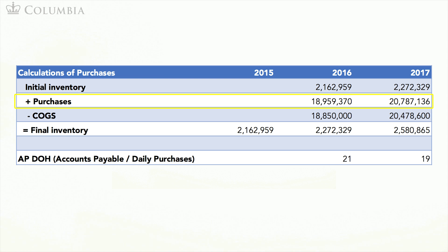Now that we have purchases for 2016 and 2017, we can compute the financial ratio called accounts payable days on hand. This is defined as accounts payable over daily purchases. We obtain 21 and 19 for 2016 and 2017 respectively. Since this ratio is relatively constant over time, we will use its average of 20 as our estimate of accounts payable days on hand in 2018.